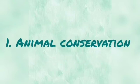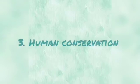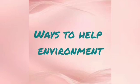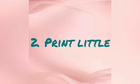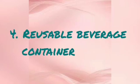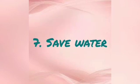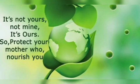There are three types of environmental conservation: animal conservation, marine conservation, and human conservation. Some simple ways to help the environment include using reusable bags, printing as little as necessary, recycling, using a reusable beverage container, not throwing away notes, saving electricity, and saving water. Save nature and nature will save you — it is not yours, not mine, it's ours. So protect your mother who nourishes you.